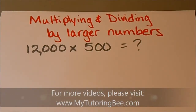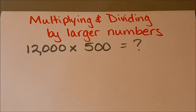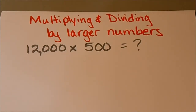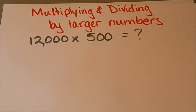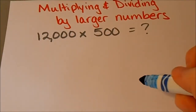Hello Tutoring Bee fans. Today I'm going to show you how to multiply and divide using larger numbers. So I have an example on my paper here: 12,000 times 500. A lot of times when students have learned their basic multiplication facts and start to get to these larger numbers, they kind of freak out. But really it's not that difficult. I'm going to show them just an easy, quick little trick that everybody really loves — it's a lot faster and easier. Before we answer this problem, I'm going to start off with some basics.